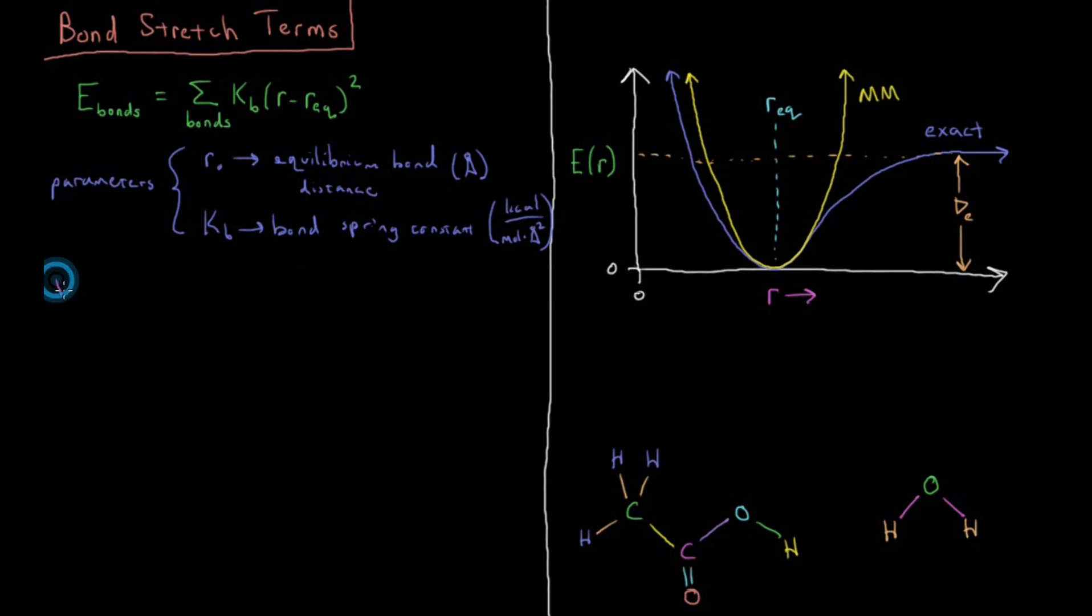And the variable for this system, or for this particular energy term, the variable is R, which is just the bond length, which is in Angstroms.